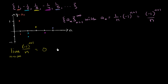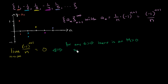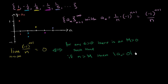In order to prove it, this is going to be true if and only if for any epsilon greater than 0, there is an M, a capital M greater than 0, such that if lowercase n, our index, is greater than capital M, then the nth term in our sequence is going to be within epsilon of our limit, within epsilon of 0.